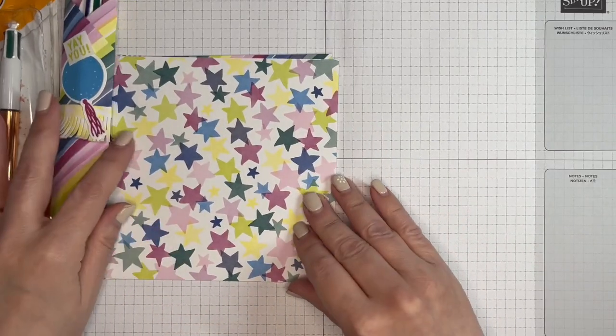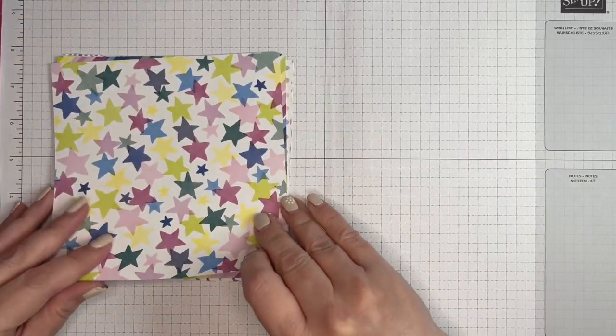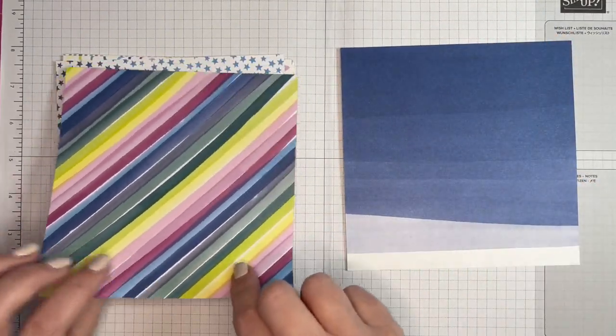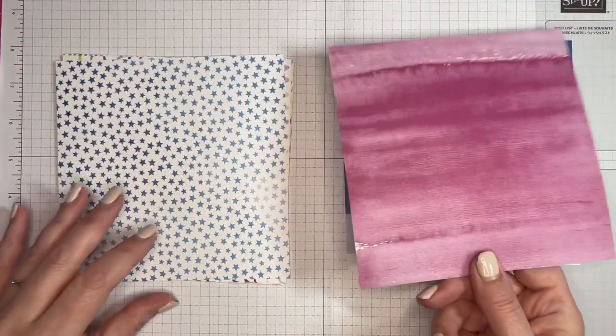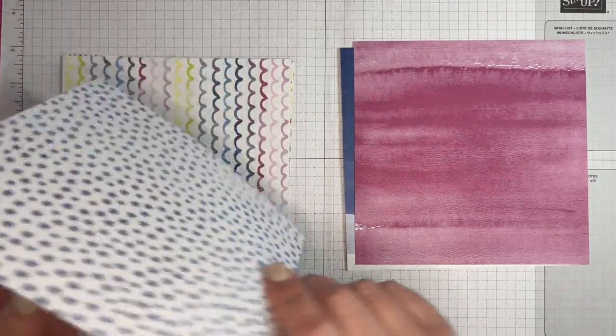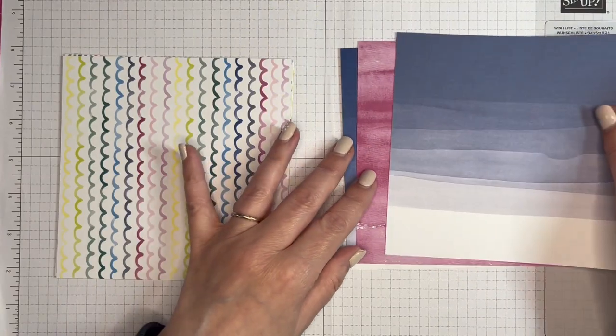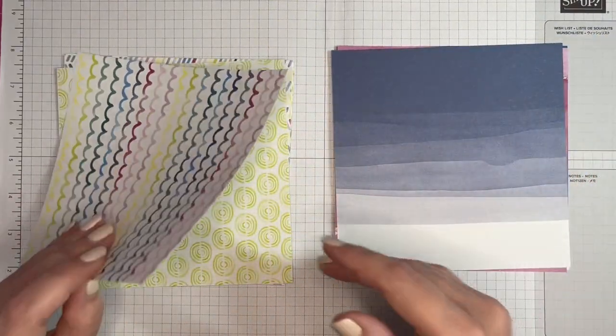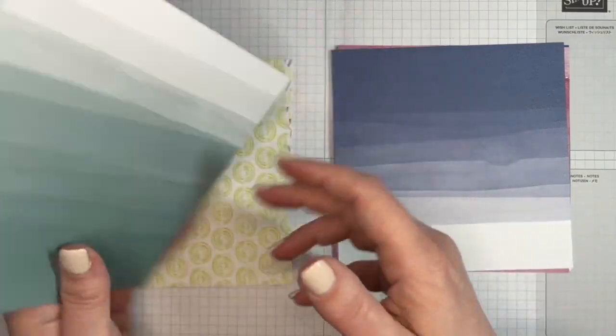So using the Bright and Beautiful Designer Series paper, I will quickly show you all of the designs. We've got stars, and a kind of ombre there. Stripes, lovely stars. We've got quite a few of these ombre type patterns. Love the squiggly lines.